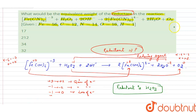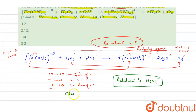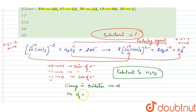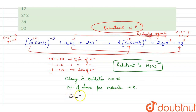To calculate the equivalent weight of the reductant, we look at the change in oxidation number. The change in oxidation number is 1, and the number of oxygen atoms per molecule of H₂O₂ is 2. Therefore, the n-factor equals change in oxidation number × number of atoms per molecule = 1 × 2 = 2.